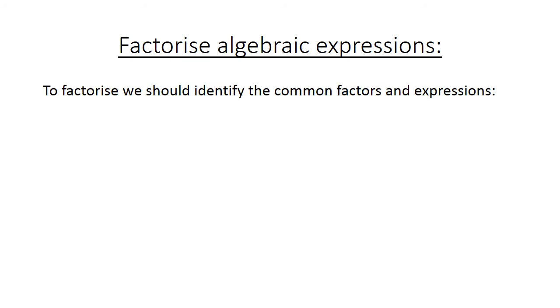Factorized algebraic expressions. First we identify the common factors and expressions. A times (A minus 4B). The common factor here is 1, and we have in brackets (A minus 4B).